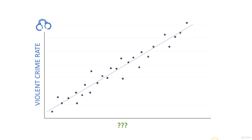You might think it's causing violent crimes, and that if only we could cut back on whatever this variable is, we might be able to make our streets safer. The problem with that is that we're looking at ice cream cones sold. You may be scratching your head, a little confused — and that's totally understandable because the human brain is biased to look for cause and effect relationships where, in fact, they don't exist.